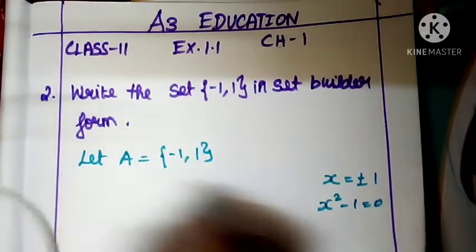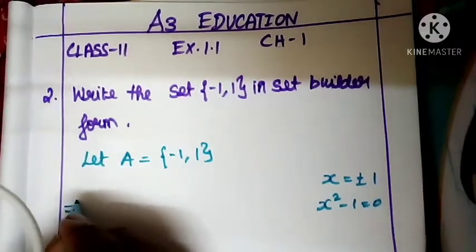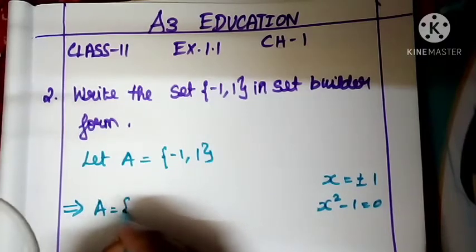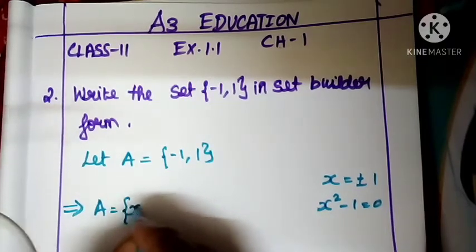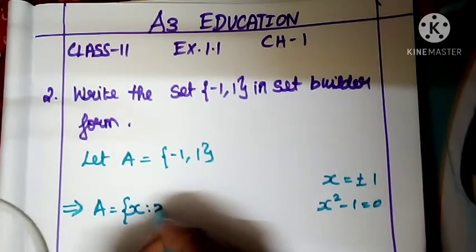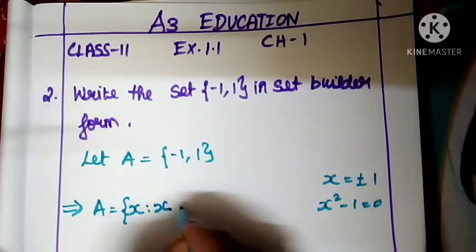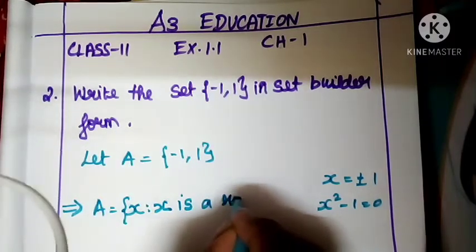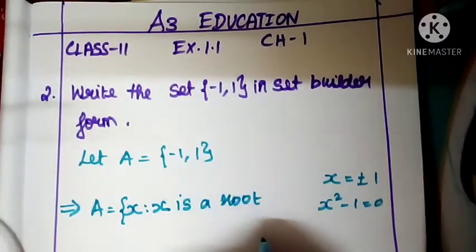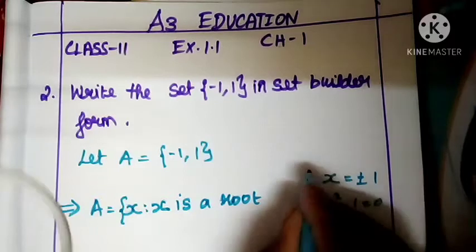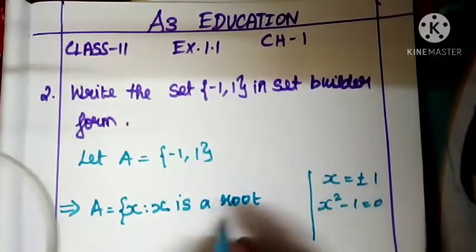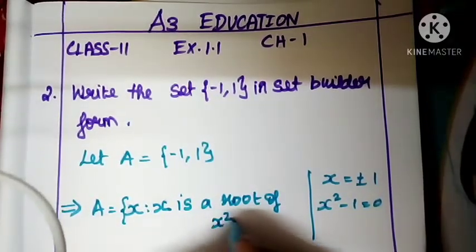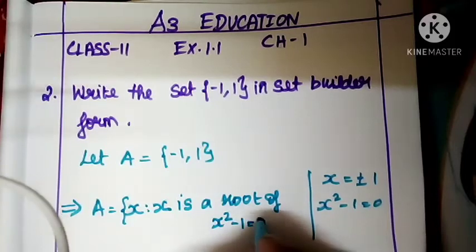Let's write this in set-builder form. A is equal to the set of x such that x squared minus 1 equals zero, where x is an integer.